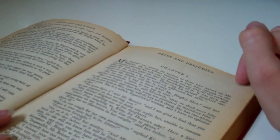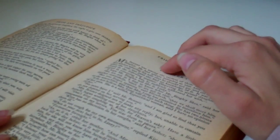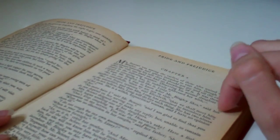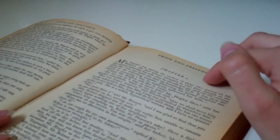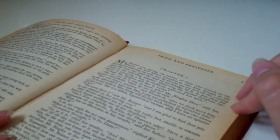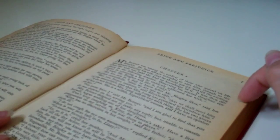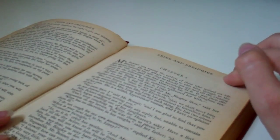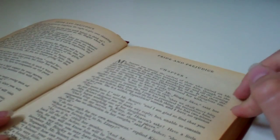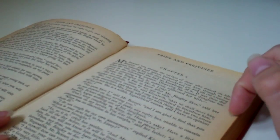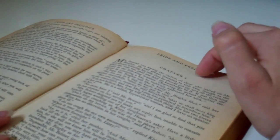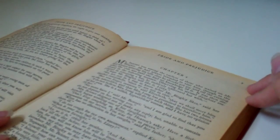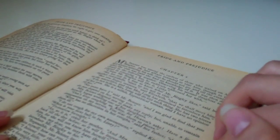No more have I, said Mr. Bennet, and I am glad to find that you do not depend on her serving you. Mrs. Bennet did not make any reply, but unable to contain herself, began scolding one of her daughters. Don't keep coughing so, Kitty, for heaven's sake. Have a little compassion on my nerves. You tear them to pieces. Kitty has no discretion in her coughs, said her father. She times them ill.